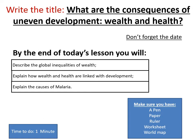Last lesson we talked about the causes of uneven development. Today is about the consequences, specifically to do with wealth, money and health. Could you write that title, read through the objectives, and make sure you've got all the equipment. The worksheet is the class charts — if you can't download it, don't worry, there's an option for copying things out. If you can print it, you'll speed yourself up.